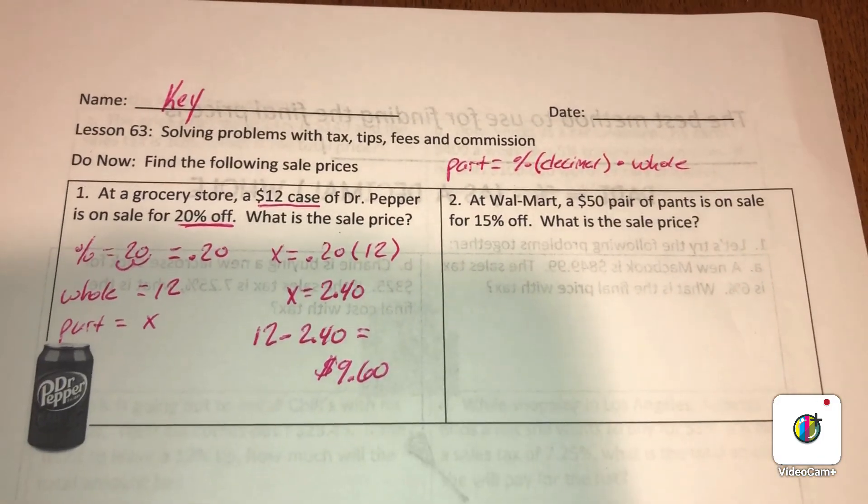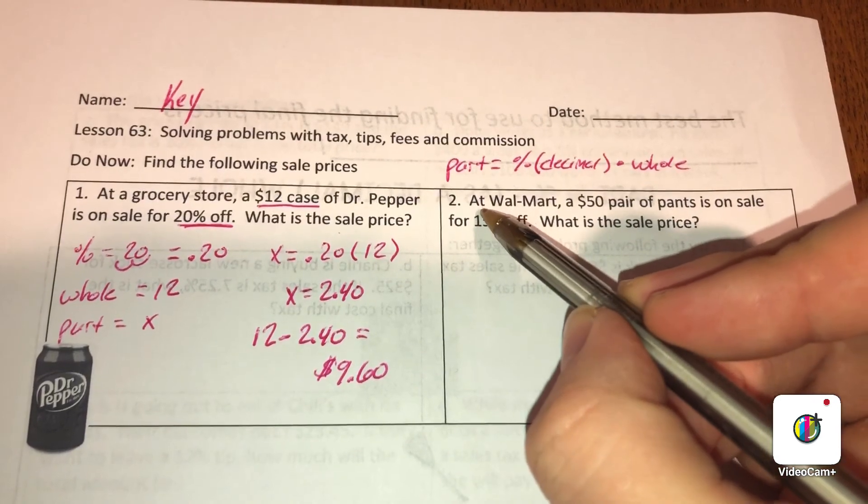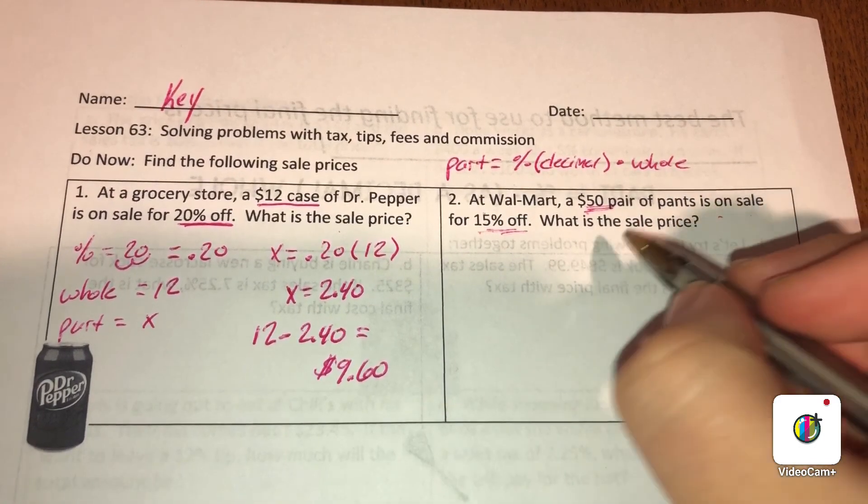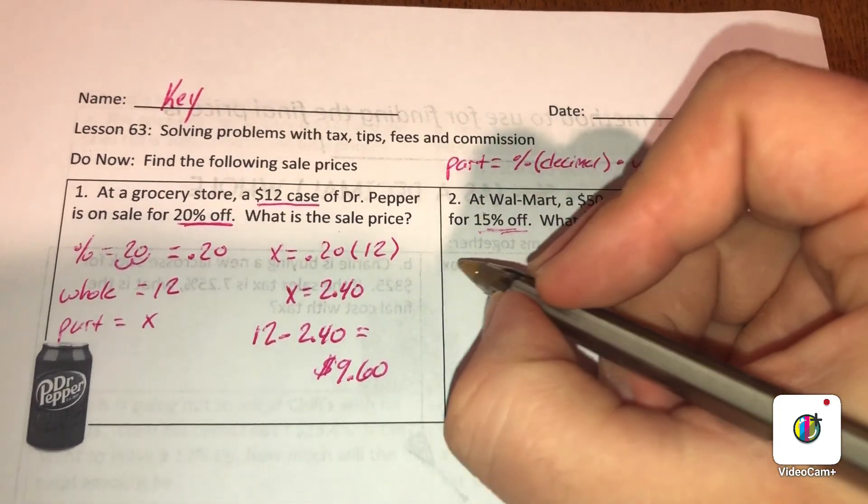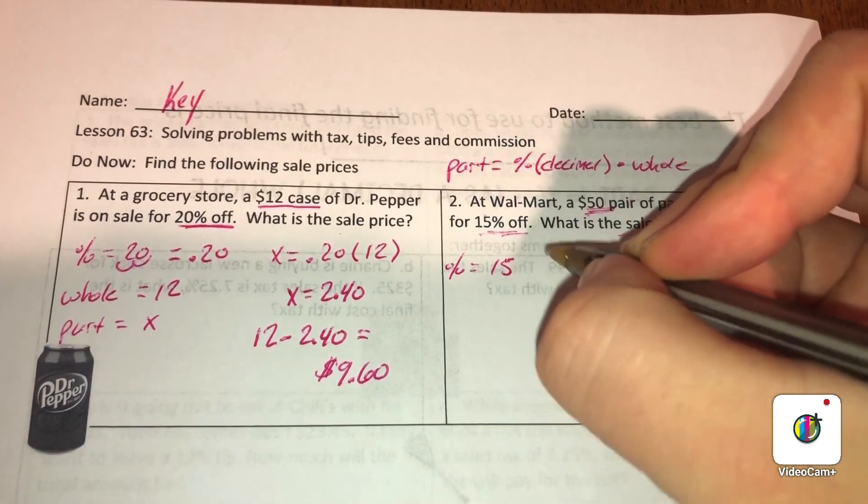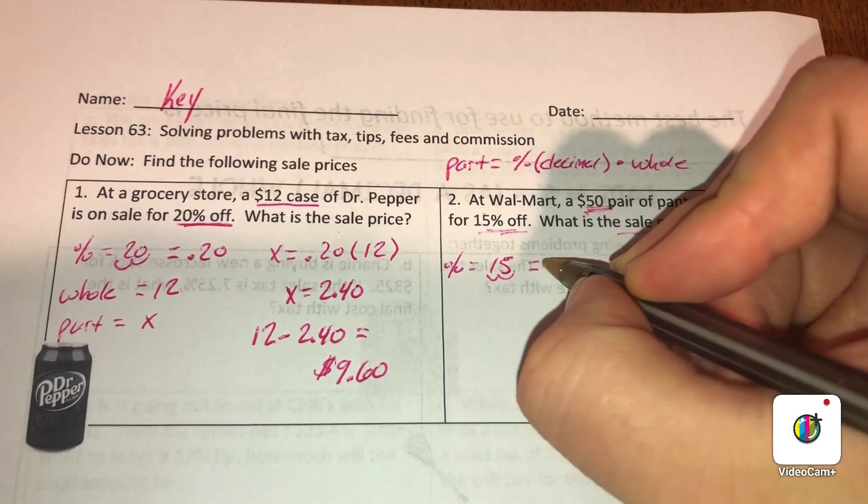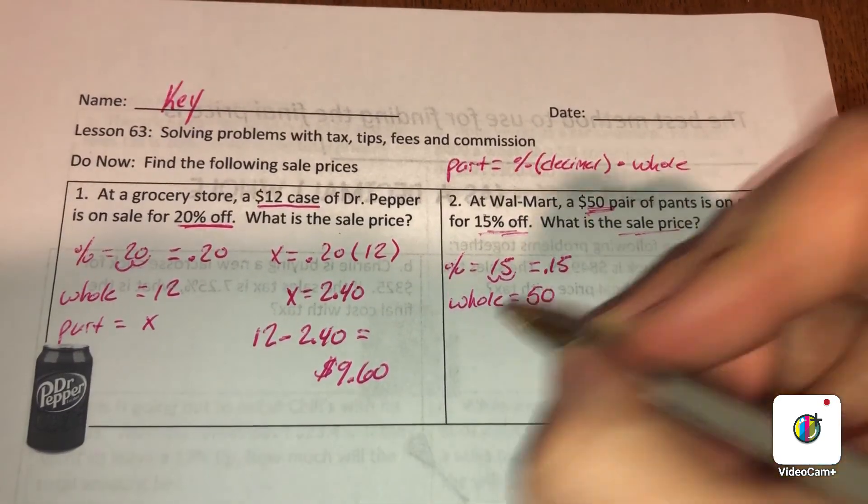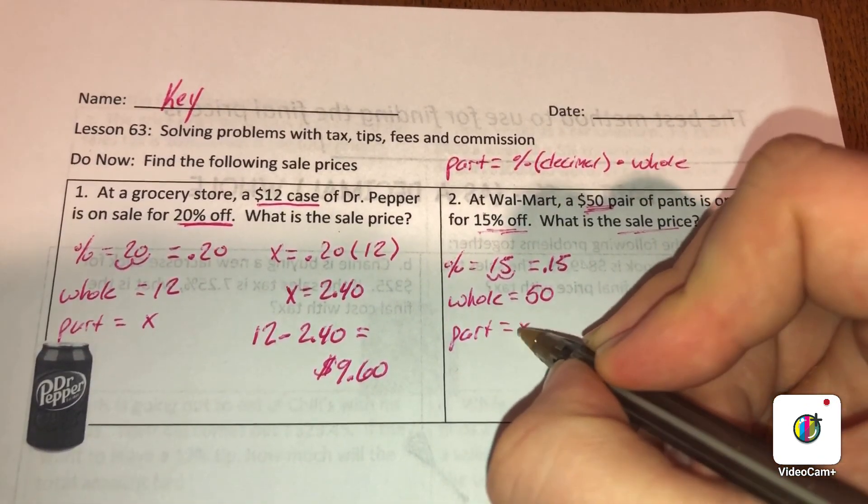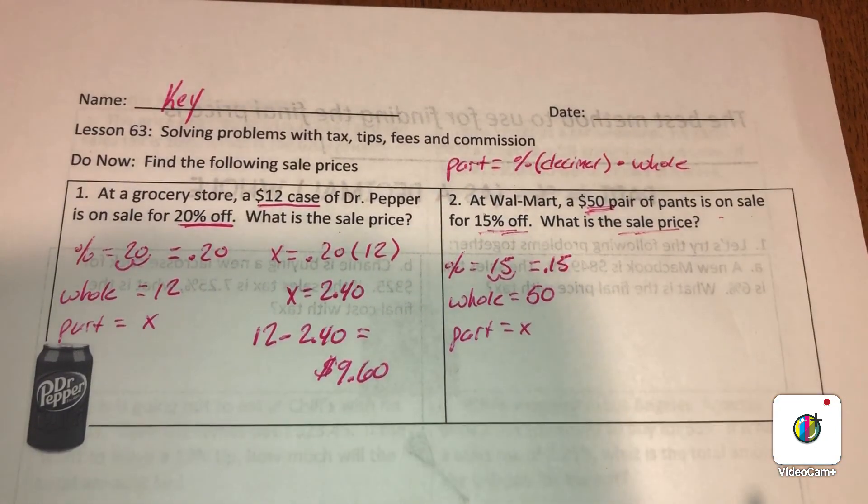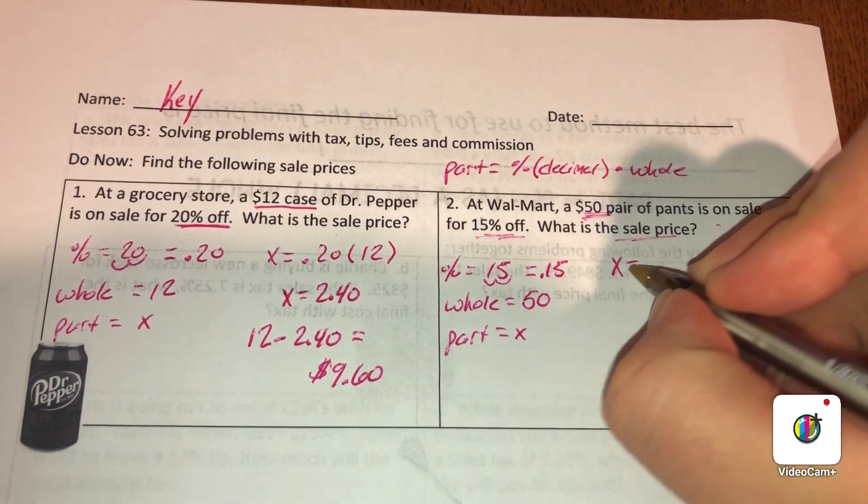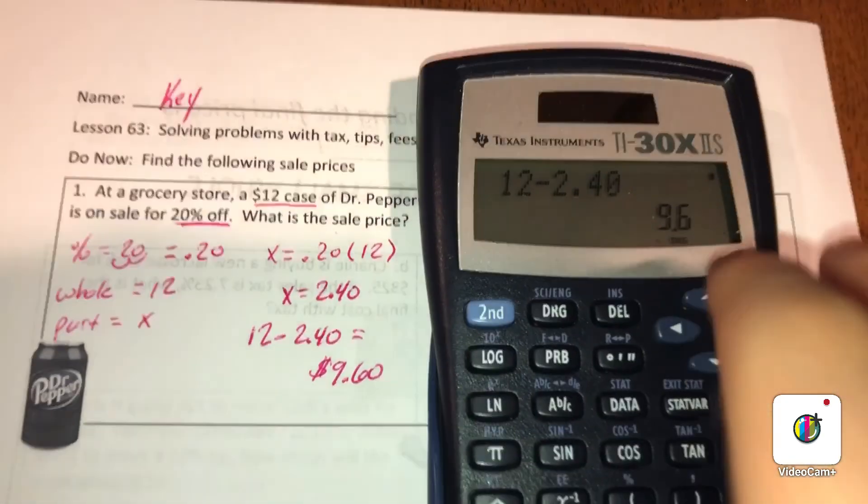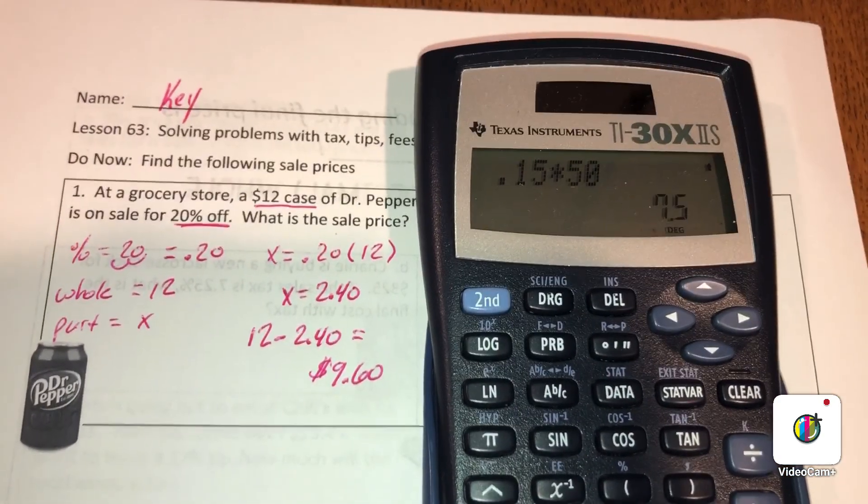Number two: At Walmart, a $50 pair of pants is on sale for 15% off. Again, we're looking for the sale price. The percent is 15, move it over two times to the left, so it's 0.15. The whole is 50, and the part is x, how much we're looking for off. So x equals 0.15 times 50, which is 7.5 or $7.50.